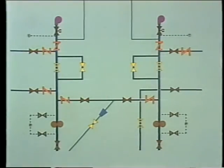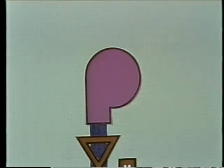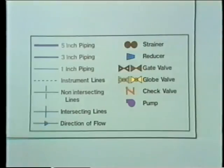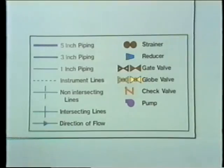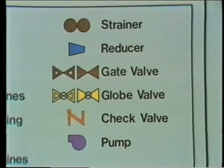Let's start with the symbols used to represent the piping itself. Using the legend that accompanies the print, we can learn a great deal about the pipes. Almost any piping system will have pipes of different size and different functions. For example, the legend may show that a thick line indicates a 5-inch pipe, a dashed line indicates an instrument line, and various symbols represent various components. Remember that you must use the legend that goes with a particular print.